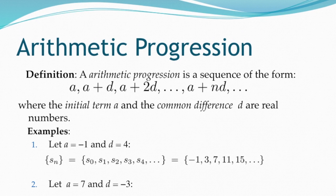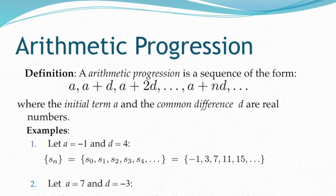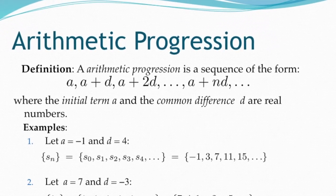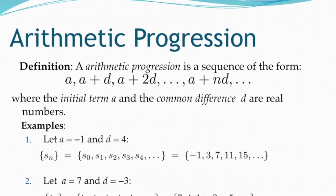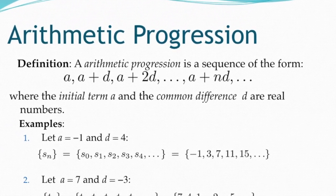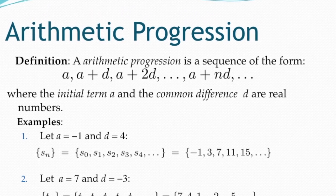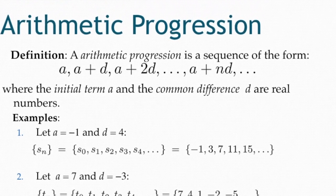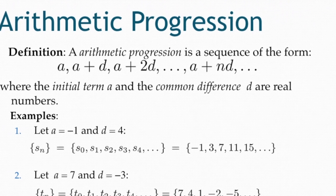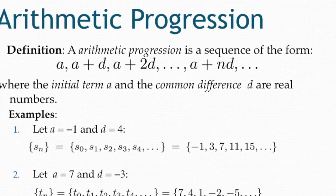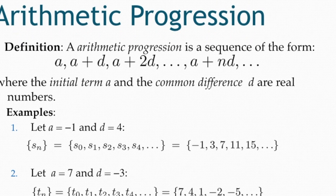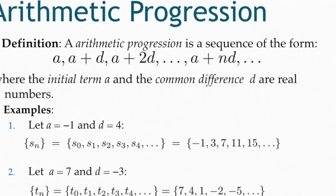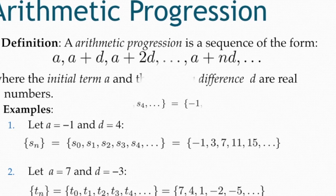The other type is called arithmetic progression. In arithmetic progression, the sequence takes the form: a, a+d, a+2d, all the way to a+nd, where the initial term a and common difference d are real numbers. For example, with a=-1 and d=4: s0 = -1, s1 = -1+4 = 3, s2 = -1+2(4) = 7.